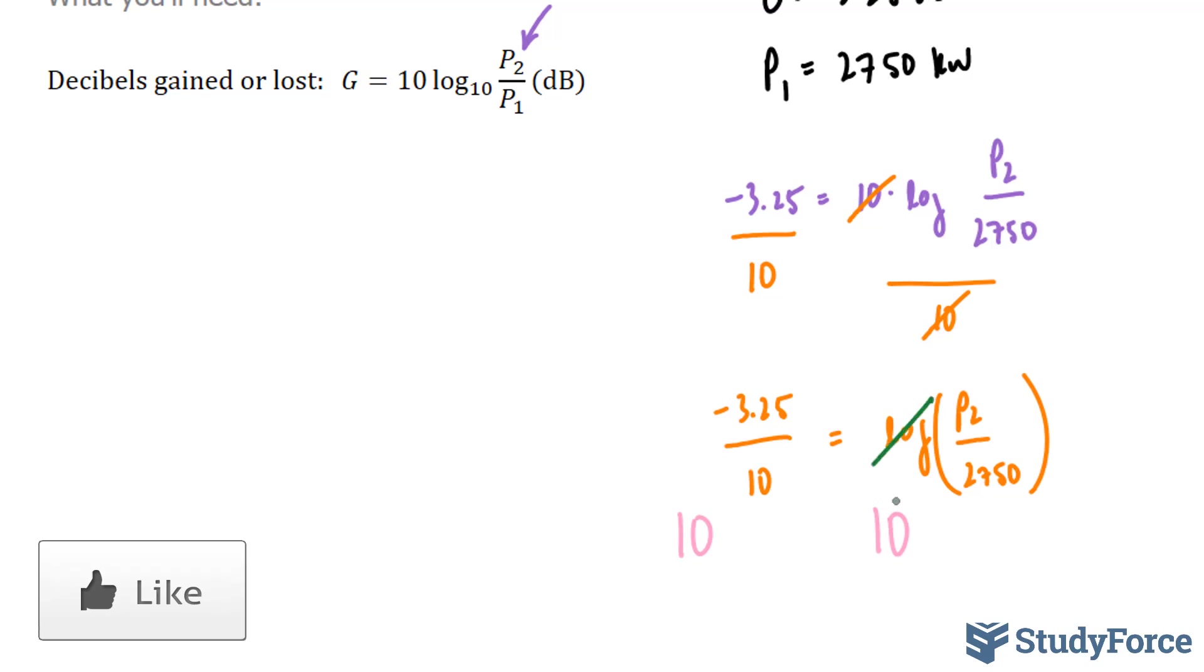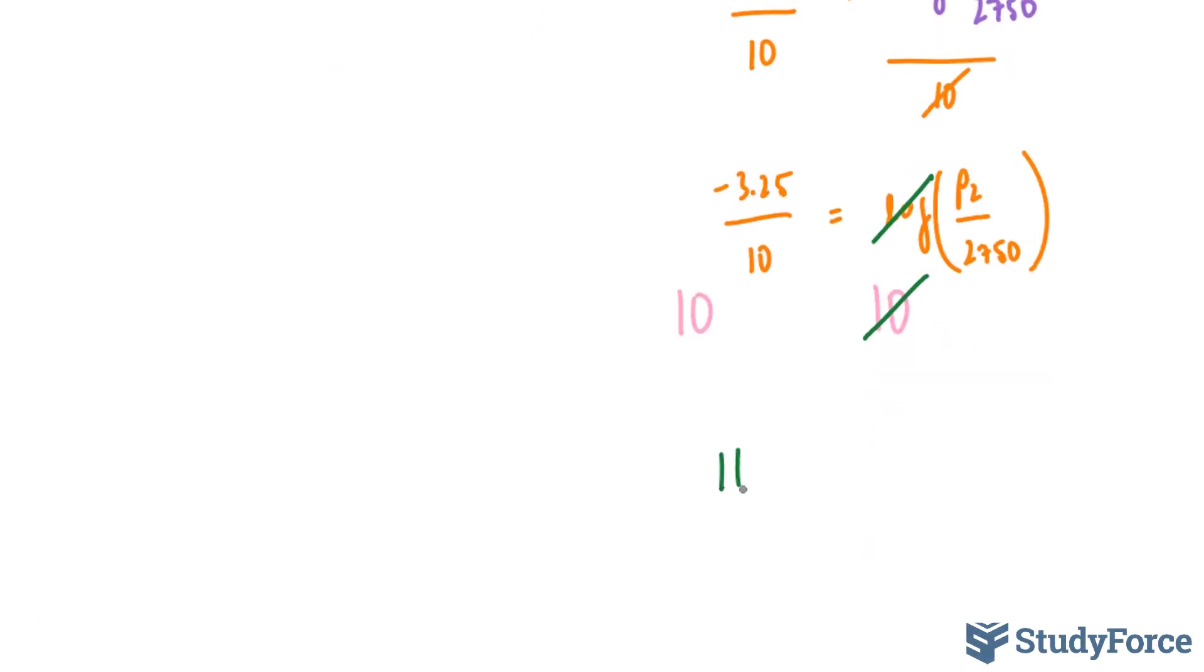So we can cancel that out, where we're left with 10 to the power of negative 3.25 over 10 equals P2 over 2750. This part I can evaluate on my calculator, and then after that I can multiply both sides by 2750, giving me the answer for P2.